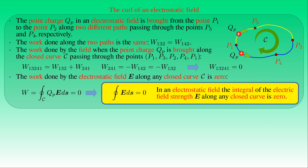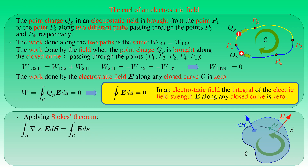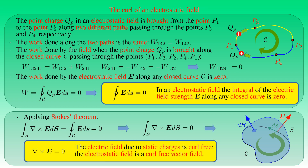By applying Stokes' theorem, the line integral of E along a closed curve C can be expressed as the surface integral of the curl of E over an arbitrary surface S bounded by curve C. Because the line integral vanishes, the surface integral of curl E is zero. Since the surface S is arbitrary, we conclude that the curl of E vanishes — in other words, the electrostatic field is a curl-free vector field.